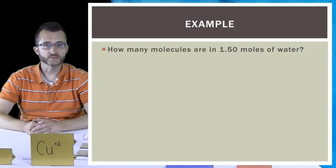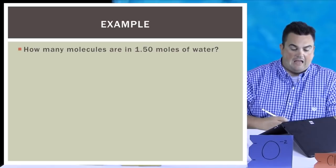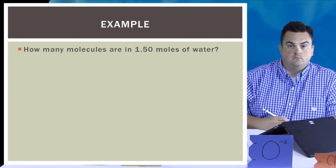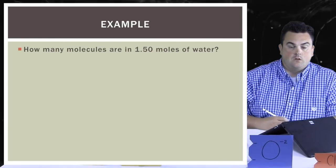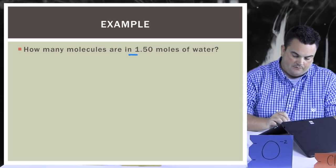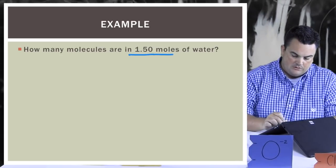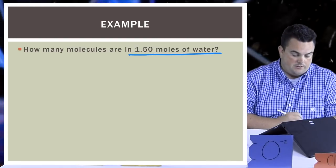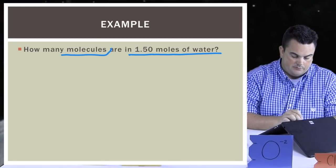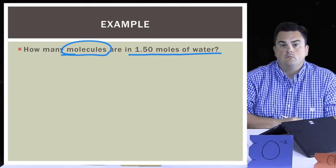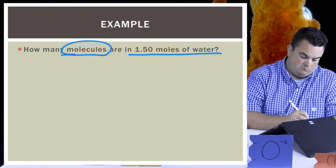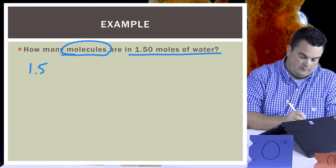Let's do our first example. The question says: how many molecules are in 1.50 moles of water? Let's break down this question. What are we given? We are given 1.50 moles of water. What are we trying to find? The question is asking for how many molecules. So we're going to convert from moles to molecules. We want to write down the given number first — that's going to be what we are converting. 1.50 moles of H₂O.